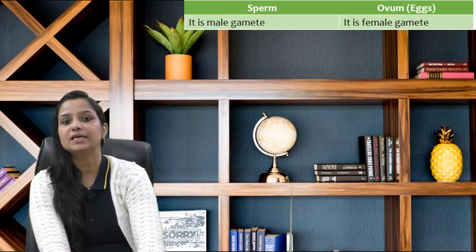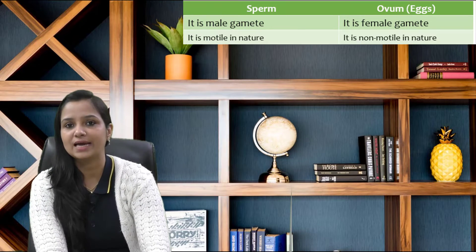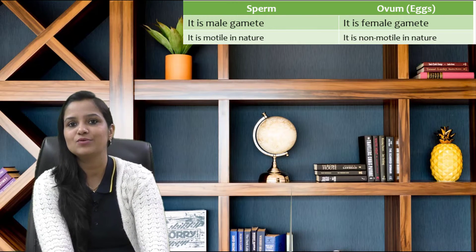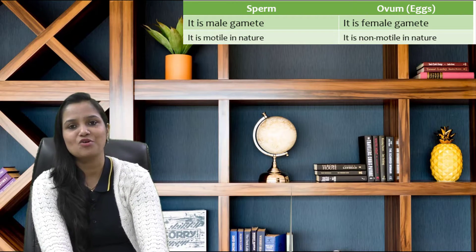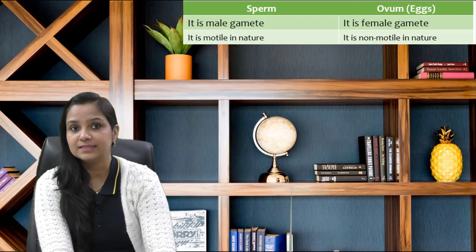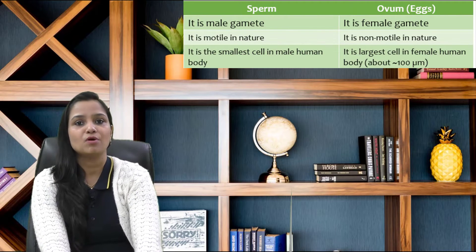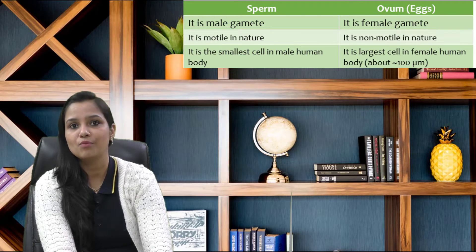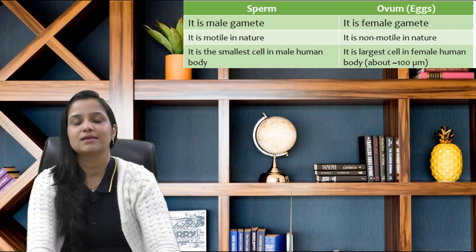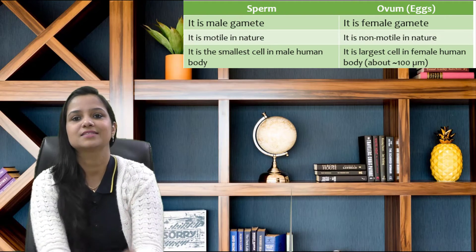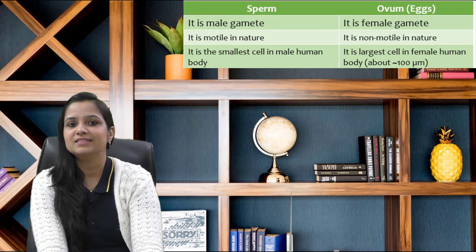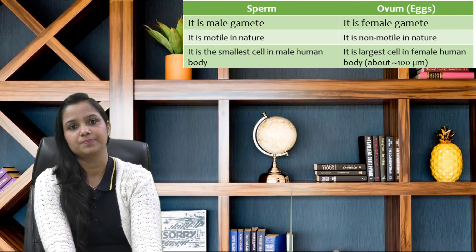When we talk about their nature, sperm is motile in nature and ovum, or egg cells, is non-motile in nature. When we talk about their size, sperm is the smallest cell in the male human body, and the ovum is the largest cell in the female human body, with a size of approximately 100 micrometers.